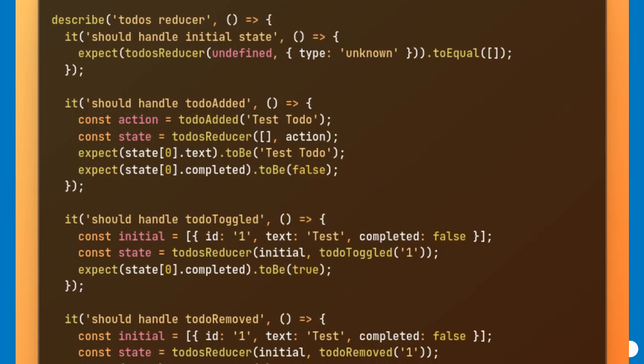This test file ensures the reliability of to-do state logic by rigorously testing all reducers. It validates initial state, adding, toggling, and removing to-dos, providing confidence in the correctness of state transitions. Using Jest's describe and it blocks, each reducer is tested as a pure function, guaranteeing deterministic and predictable behavior. Such unit tests are an essential component of robust Redux development workflows.